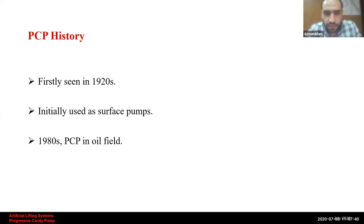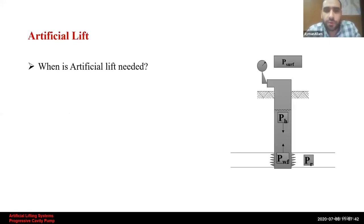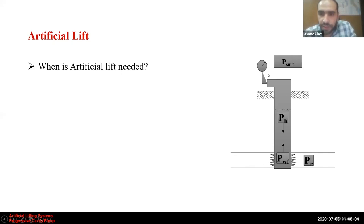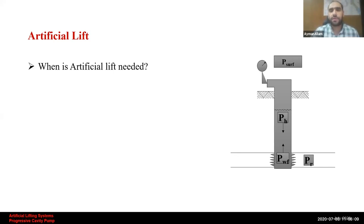This drives us to an important question: when do we need artificial lift? Oil wells need artificial lifting when the bottom hole flowing pressure is unable to lift the formation fluids from the formation up to the surface with enough pressure to reach the production facility. In this case, the well is known as a dead well.